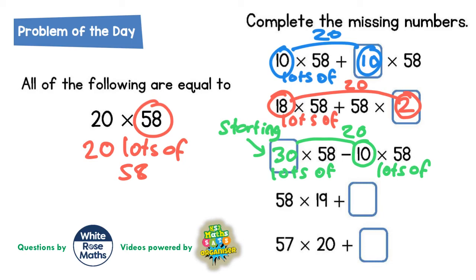On the next calculation we've got 58 times 19. Well, don't forget that 58 times 19 is the same if you switch that round, so 19 times 58.